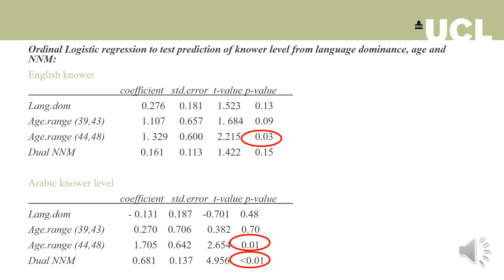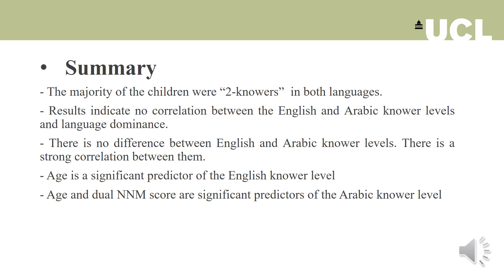For Arabic knowledge level, there is a strong and significant positive association with dual case comprehension independent from the effect of age. As dual case comprehension increases, so does Arabic knowledge level. There is no such effect on English knowledge level. Despite the strong influence of dual case marking on Arabic but not English knowledge levels, there is no overall difference in knowledge levels between languages. This may indicate some form of interaction between languages.